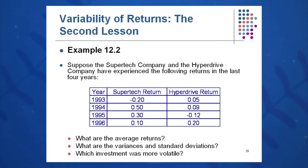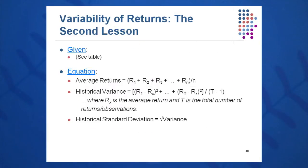Let's look at how to calculate standard deviation and variance — we can repeat this for any instrument over any sub-segment of years. Here's an example: SuperTech and HyperDrive have the following returns over the last four years. We want to find the average return, the variance, and standard deviation, and determine which is more volatile. To get the average, add up all the returns and divide by n. The variance is the sum of squared deviations divided by T minus one observations.